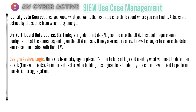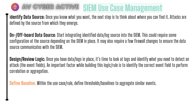Next in SIEM use case management is to design and review rule logic. Once your data sources are in place, look at the logs and identify what you need to detect an attack — such as the relevant event fields. It's also important to identify and use the correct fields to perform proper correlation and aggregation. After that is defining the baseline, where use case patterns and rules are set so you can define thresholds and aggregate similar events. Most SIEM solutions come with default aggregation settings, but you should fine-tune them to your environment.